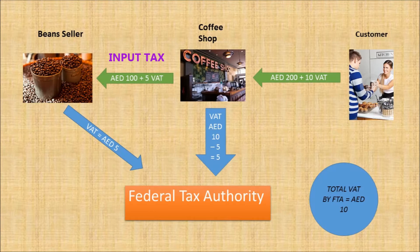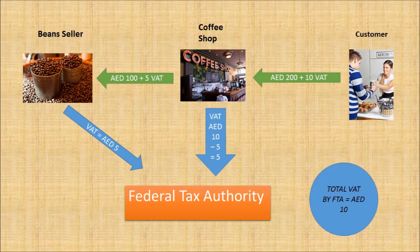Now the coffee shop will subtract the input tax from the output tax, which means that they will pay only 5 dirhams to the Federal Tax Authority. The bean seller, since the bean seller does not have any input tax in this example, will pay the tax it received — the 5 dirhams — to the Federal Tax Authority. You can see that the Federal Tax Authority receives a total of 10 dirhams: 5 dirhams from the coffee shop and 5 dirhams from the bean seller. In this example you can see how the entire supply chain is affected by VAT.